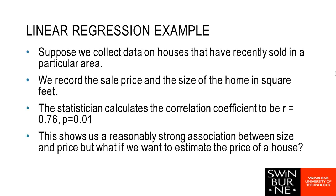Let's look at an example. Suppose we have some data on houses that sold recently and we've been collecting information on their sale price and the size of the house. We find a quite strong correlation — 0.76 — and the p-value is 0.01, so not only is it a strong correlation, we definitely think it translates from the sample into the population.